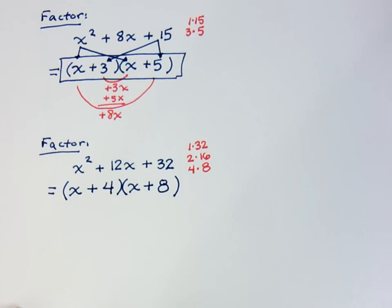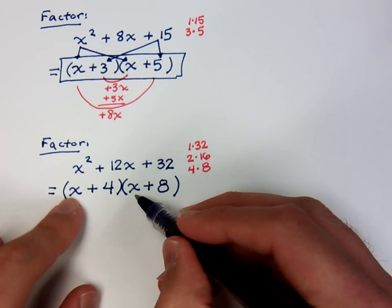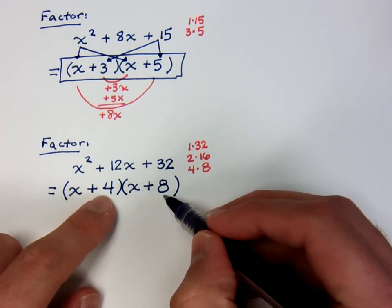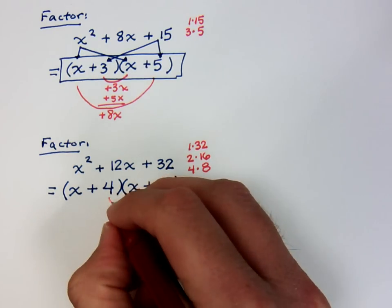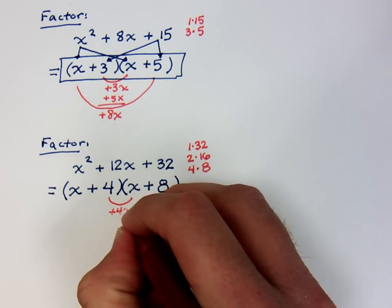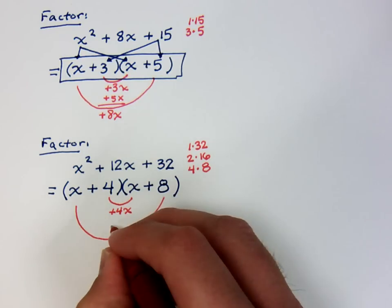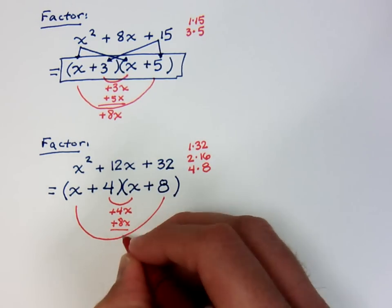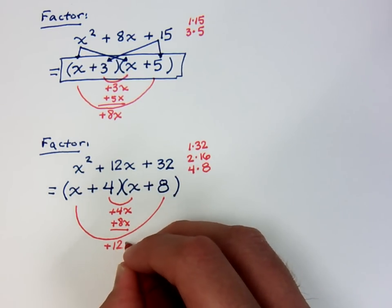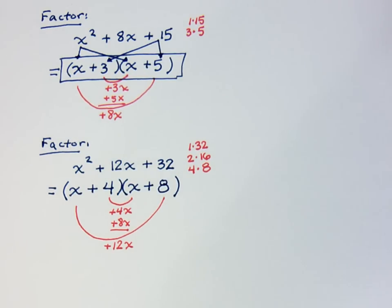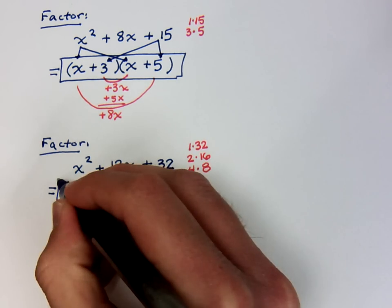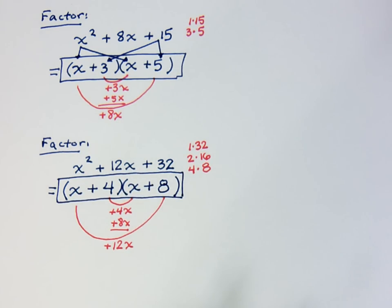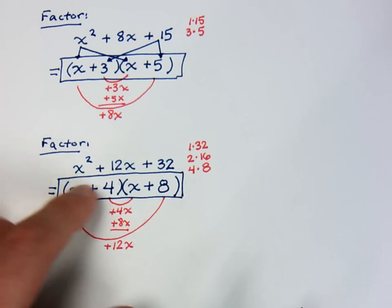We always have to multiply to check our answer. Let's do this. x times x gives you x squared. Positive 4 times positive 8 is positive 32. And then we're going to move on to the inside and outside pieces. This is a positive 4x when I multiply on the inside. On the outside is a positive 8x. And when I combine these guys, I get 12x. So I know that my work is right. I've been able to multiply back out. I've checked everything. Now, in the next videos, we're going to see what happens if it's not all positive. So I've been too nice for you. Let's see what happens when we change the signs.